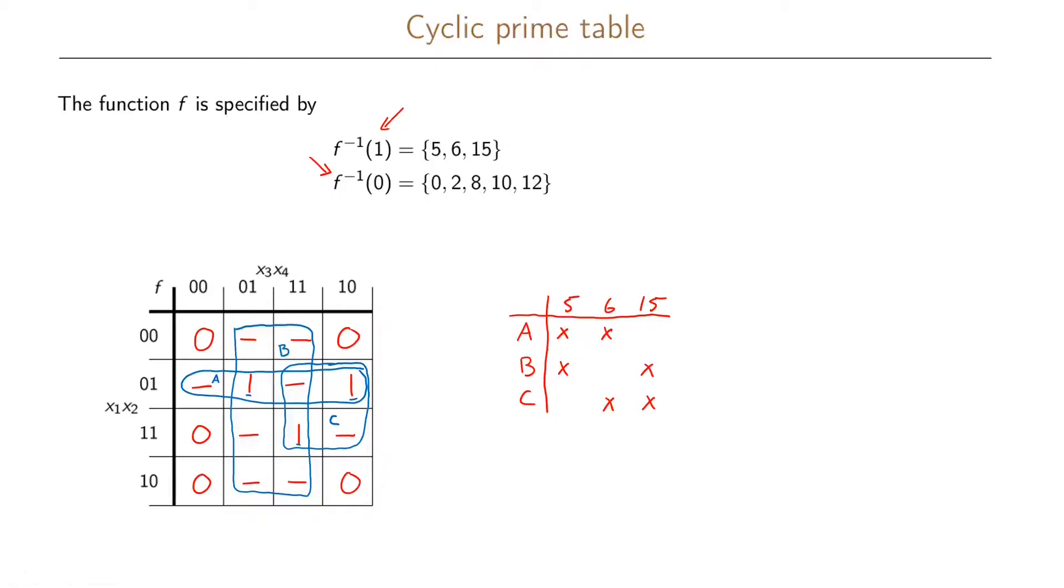If we now look at our prime table we can see that there is not much we can do. We have no essential rows, we have no dominated rows that we can remove, and we have no dominating columns that we can remove. So if we want to write our function in minimal form, we can write it as either A or B, or we can write it as A or C, or we can also write it as B or C. And all of these are minimal.